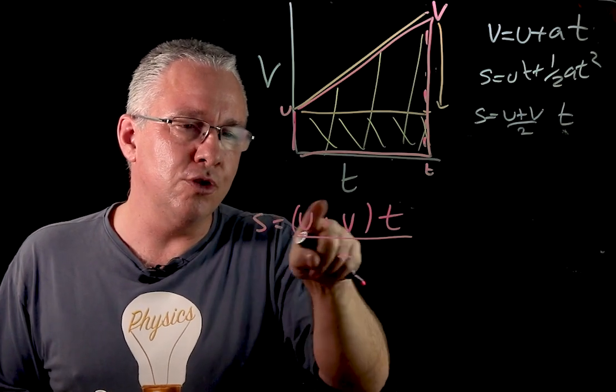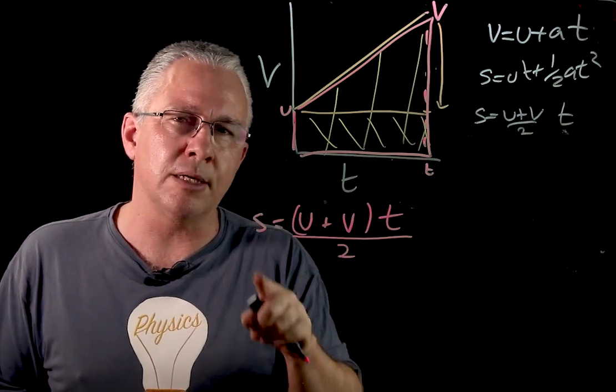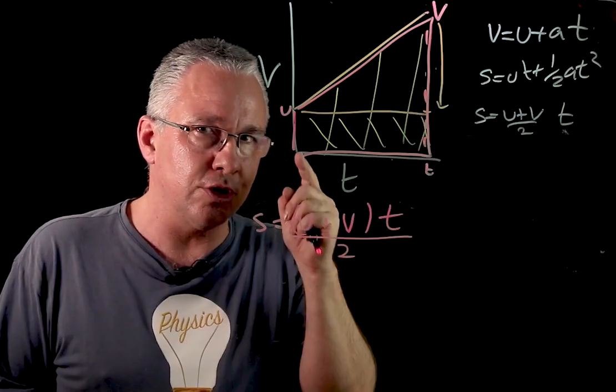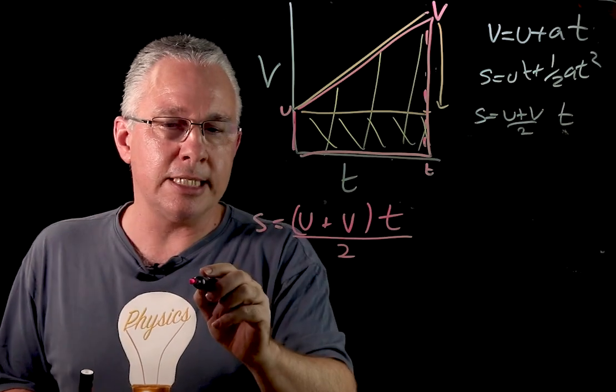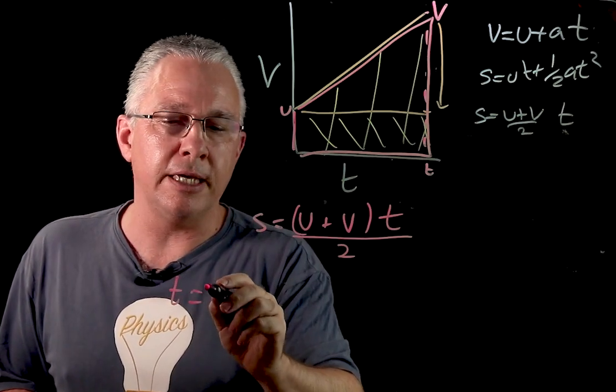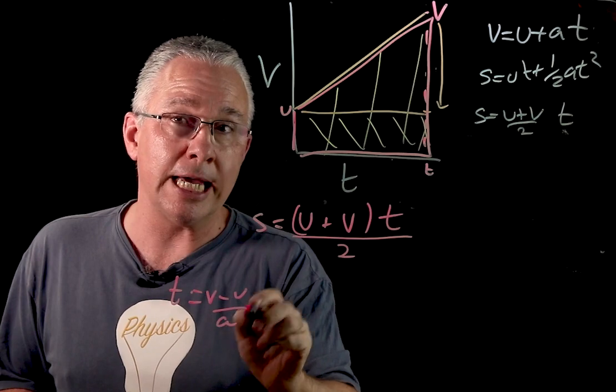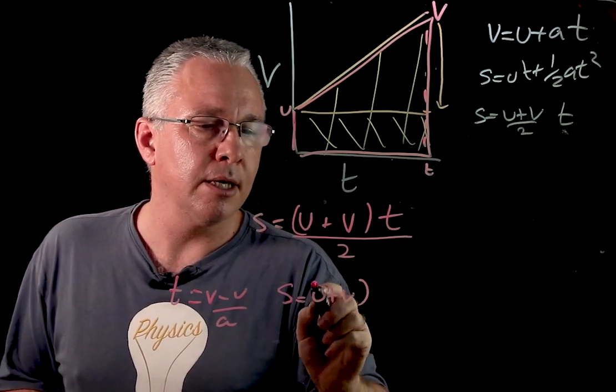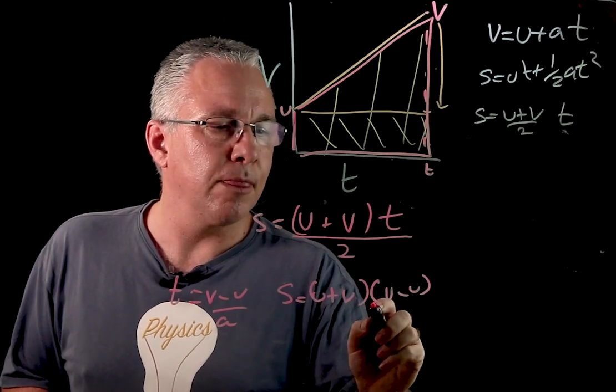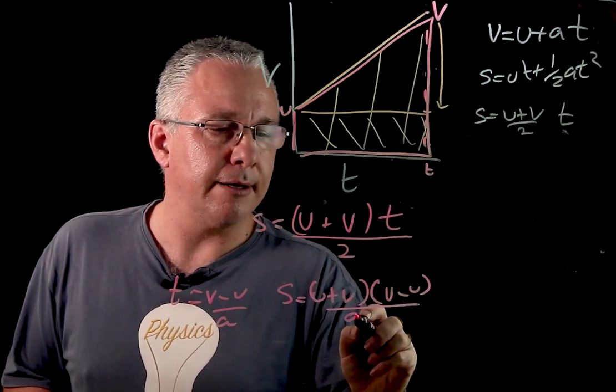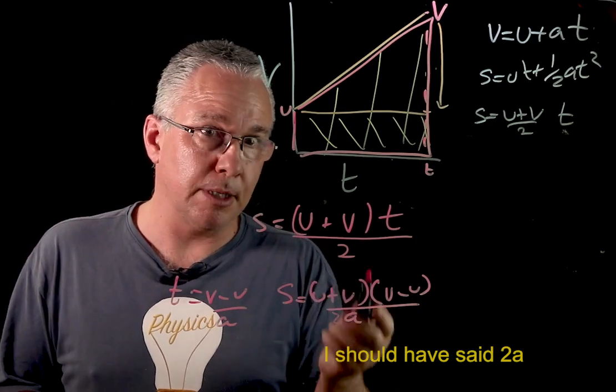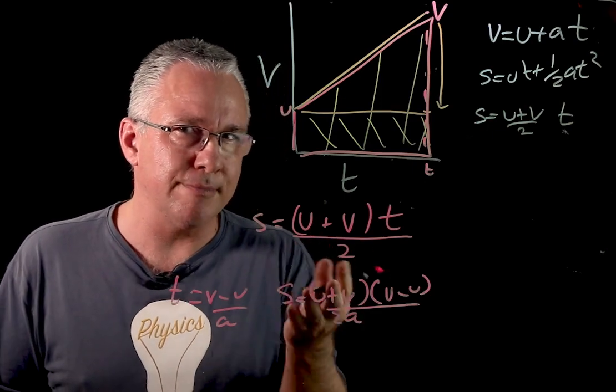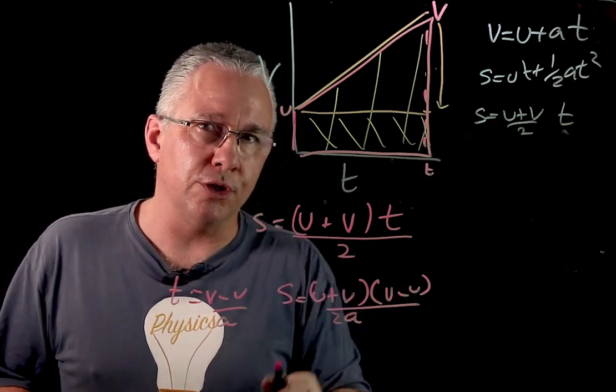How can I now use this to work out our fourth equation of motion? And in this case, I'm going to want to get rid of t. Now again, I'm going to use this first equation of motion to solve that. So we know that t is going to be rearranged v minus u over a. If I substitute that in, I get s is equal to u plus v multiplied by v minus u all over a. Now what's u plus v multiplied by v minus u? If I rearrange this u plus v into v plus u, it makes a bit more sense. So I have v plus u, v minus u. Notice that it's a difference of two squares.